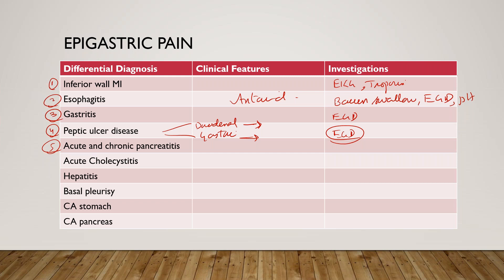Fifth is acute and chronic pancreatitis. Pancreatitis can cause pain in the epigastric region radiating towards the back, associated with nausea and vomiting. Workup-wise, check pancreatic enzymes — check lipase — and do imaging.